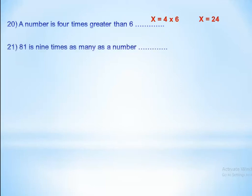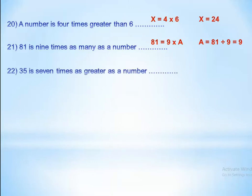A number is 4 times greater than 6: x equals 4 times 6, so x equals 24. 81 is 9 times as many as a number: a equals 81 divided by 9, so a equals 9. 35 is 7 times as many as a number: a equals 35 divided by 7, so a equals 5.